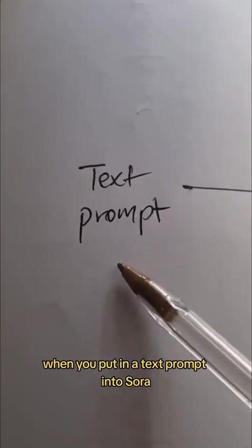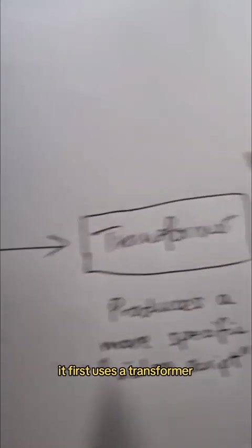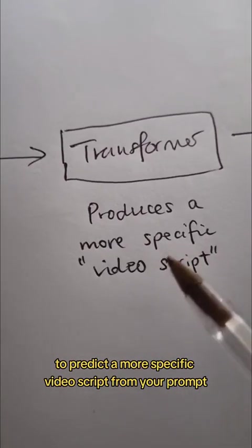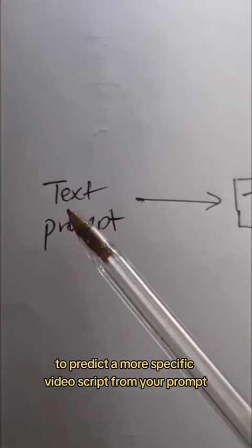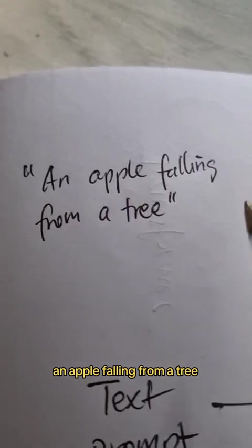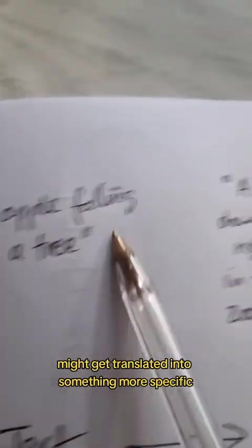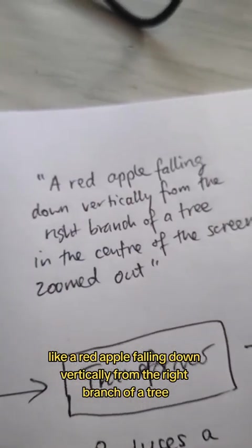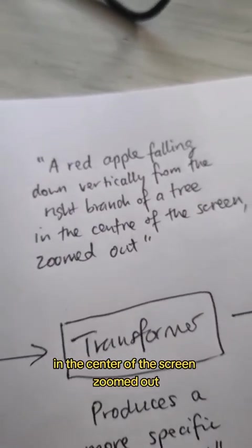When you put in a text prompt into Sora, it first uses a transformer to predict a more specific video script from your prompt. For example, the prompt 'an apple falling from a tree' might get translated into something more specific like 'a red apple falling down vertically from the right branch of a tree in the centre of the screen zoomed out.'